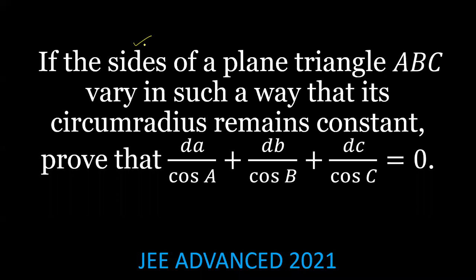The problem is: if the sides of a plane triangle ABC vary in such a way that its circumradius remains constant, we have to prove this.